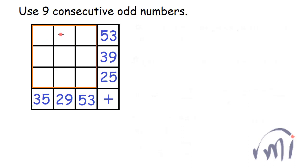Here we have a grid where we have to fill certain numbers in these small squares such that the sum of the first row is 53 and second is 39 and the third is 25. The sum of the first column is 35.